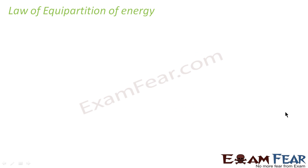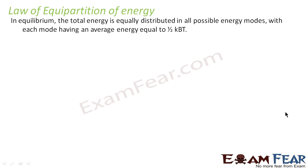Now that we are clear with what is degree of freedom, it will be easier for us to understand the law of equipartition of energy. This law states that in equilibrium the total energy is equally distributed in all possible energy modes with each mode having an average energy equal to half kB T. This B should be subscript.